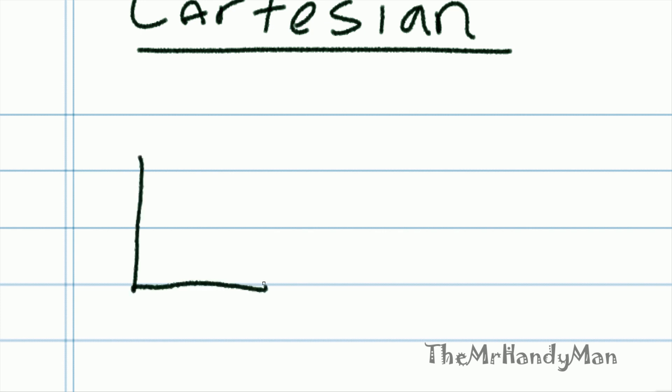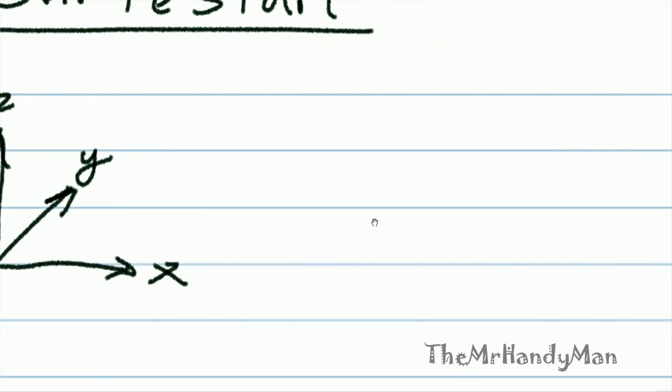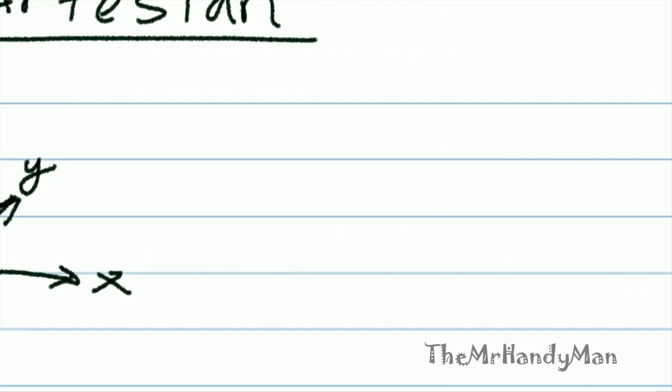It is X, Y, Z, and this is usually what you learn back in elementary school—that is the Cartesian coordinate system. And just to give you an idea, I'm going to attempt to draw.